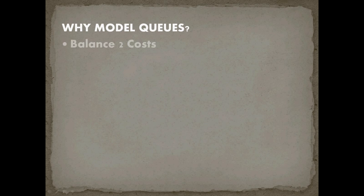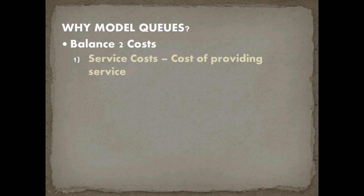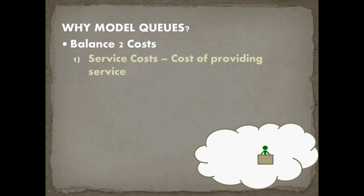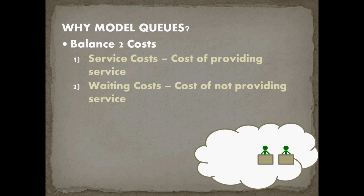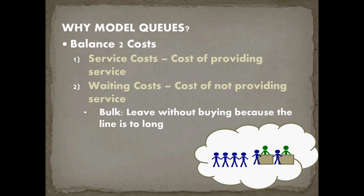So why do businesses model queues? The answer is to balance two costs. The first cost is service cost — the cost of providing service. Do I have one person helping my customers or two? Service costs are linear because I know how much I'll pay for each additional server. The second cost is waiting cost — the cost of not providing service. If a whole bunch of customers show up, how long do they wait? If they're employees, there's the opportunity cost of potentially doing other work. If you're a storefront, you have the risk of them balking — leaving without making a purchase, which is foregone earnings. Or they can buy and never return, meaning you lose all subsequent sales.